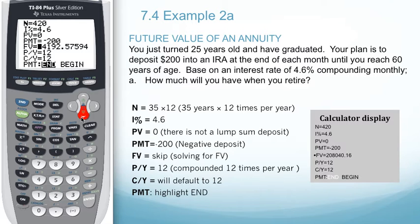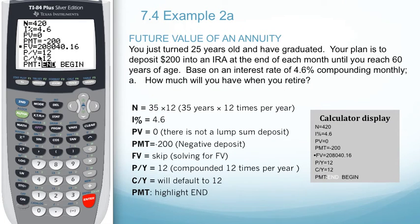In order to solve for future value, we want to hit Alpha and Enter. This gives us a future value of $208,040.16 when we retire at age 60.